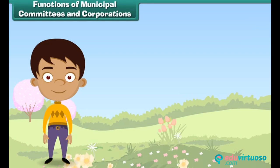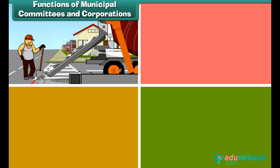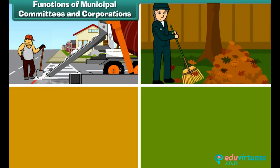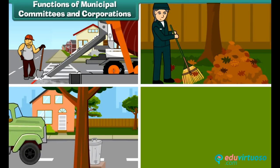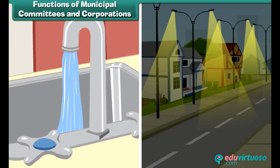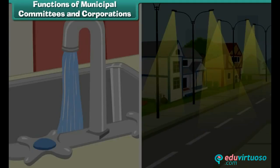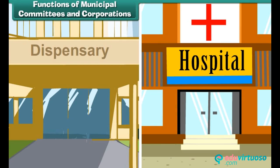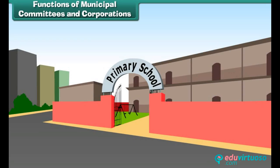Municipal committees and corporations look after maintenance of roads, maintenance of parks and gardens, removal of garbage, drainage of water, supply of clean drinking water to people, street lighting, opening of hospitals, dispensaries and healthcare centers, and opening of primary schools.